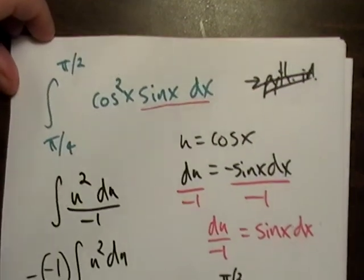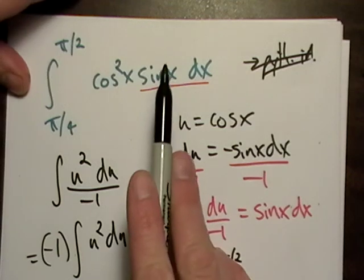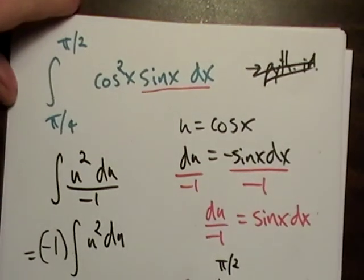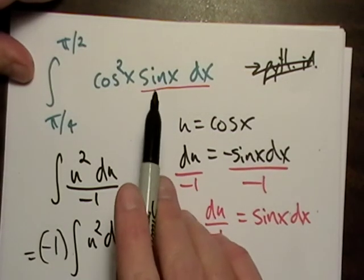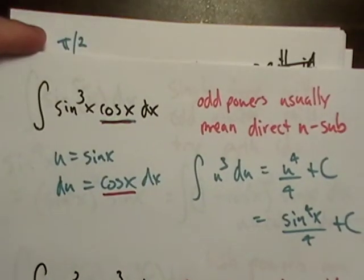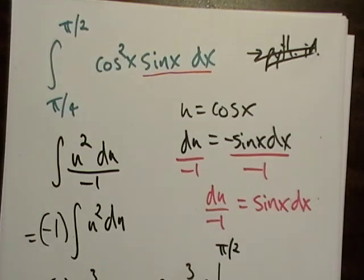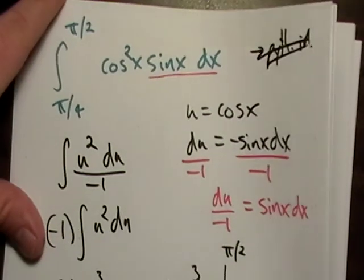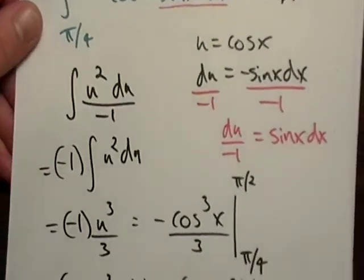So basically, just going through this, we had, the rule says that an odd power, go ahead and try the Pythagorean identity, but we already had a lone trig function sitting out there. So usually, that's a good tip off to go ahead and try a U substitution first. And even, we even kind of covered that in our very first rule. It just happened we had a bigger power there. So, had this not worked, we probably would have tried the Pythagorean identity next. Okay? All right, we'll see you in the next video, and we'll do another one. We'll do a more complicated example.